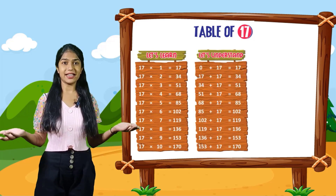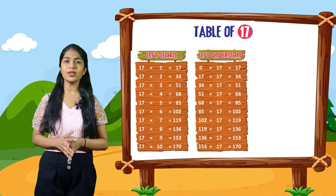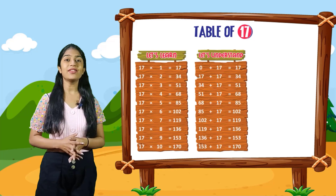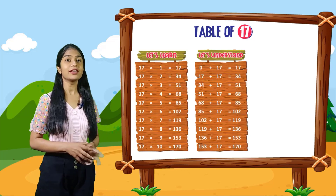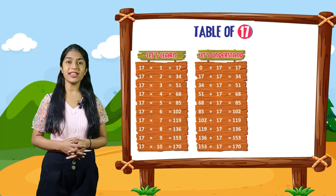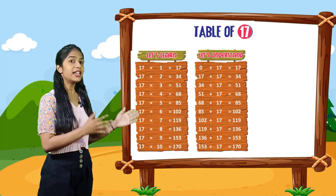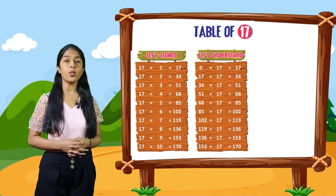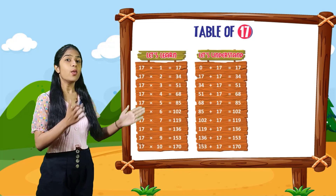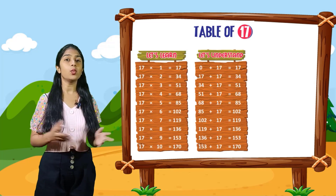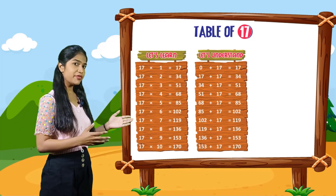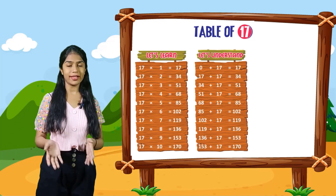So now let's understand. 0 plus 17 is equal to 17. 17 plus 17 is equal to 34. 34 plus 17 is equal to 51. 51 plus 17 is equal to 68. 68 plus 17 is equal to 85. 85 plus 17 is equal to 102. 102 plus 17 is equal to 119. 119 plus 17 is equal to 136. 136 plus 17 is equal to 153. 153 plus 17 is equal to 170.